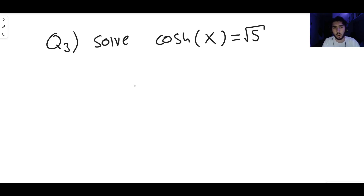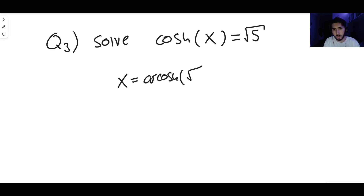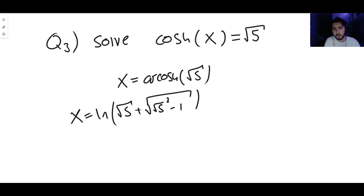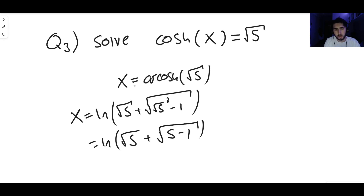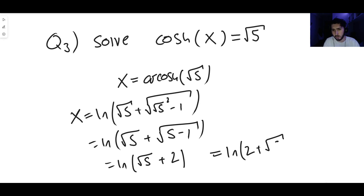Finally, we've got one more question: cosh x equals root five. With cosh - and this is not something you need to worry about with sinh or tanh - you do need to be a little bit careful with your answers. For now we'll do the normal method: x equals arcosh of root five, which using the definition of arcosh equals the natural log of root five plus the square root of root five squared minus one. That's the natural log of root five plus the square root of five minus one, which is the square root of four, which is two. So x equals the natural log of two plus root five.